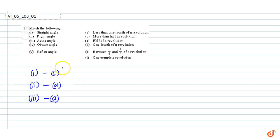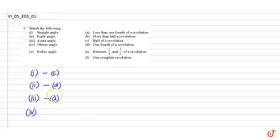Obtuse angle means between 90 degrees and 180 degrees, that is between one-fourth and one-half of a revolution, so the answer is E.